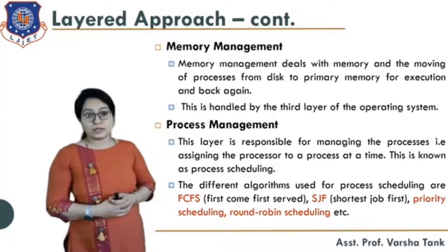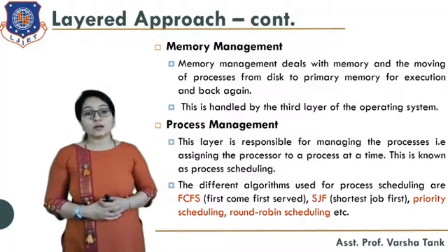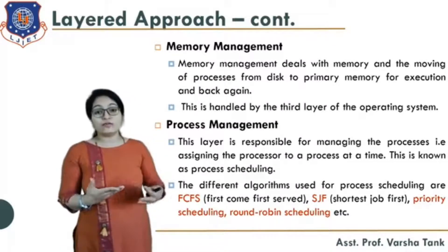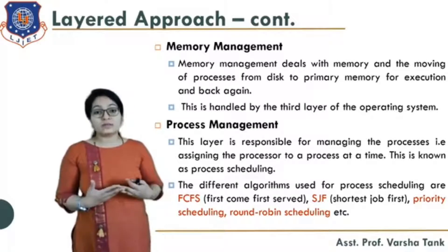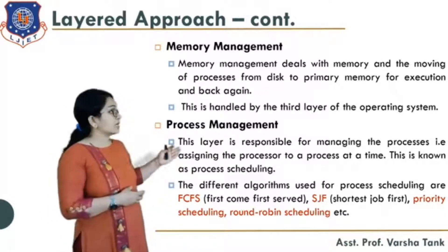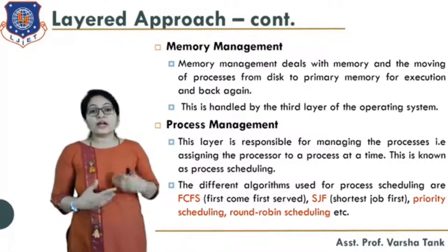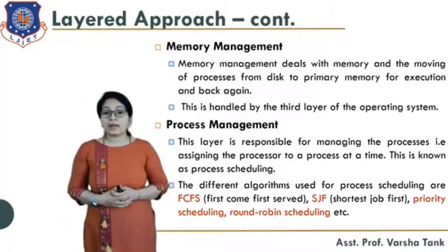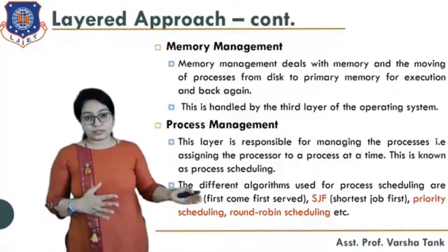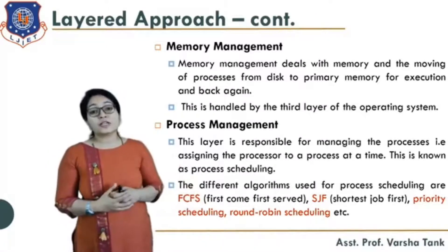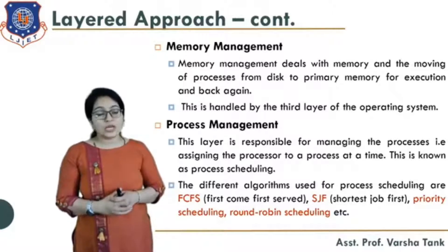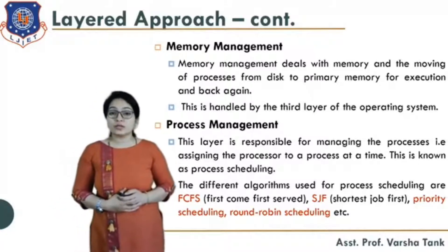Next is process management — which process will go for execution first, based on priority, and which process will be executed for some time duration. Different types of algorithms are used for process scheduling: FCFS (First Come First Served), SJF (Shortest Job First), priority scheduling, and round robin. FCFS means the process which comes first will be served first; SJF means the process with the least execution time gets first priority.